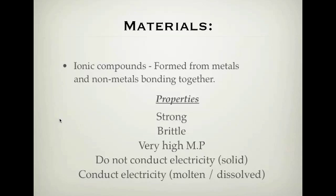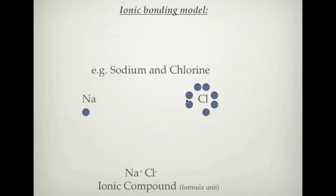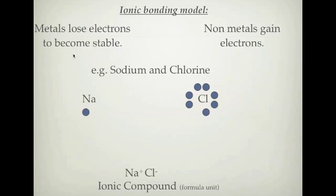Let's look at how ionic compounds form. We'll use sodium and chlorine as our example. The Lewis dot structure shows sodium has one electron on its outer shell, and chlorine has seven electrons on its outer shell. Metals lose electrons to become stable and non-metals gain electrons. So sodium is going to lose its one electron, and that electron will transfer over to chlorine.